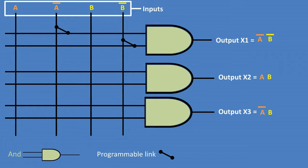So for X1, we'll need to connect our programmable links to the inputs NOT A and NOT B. For X2, we'll need to connect our inputs A and B by programmable links.